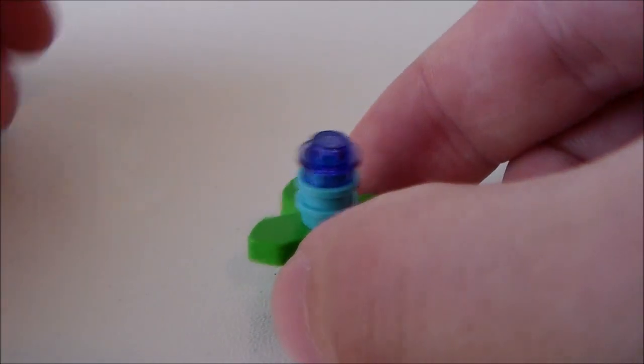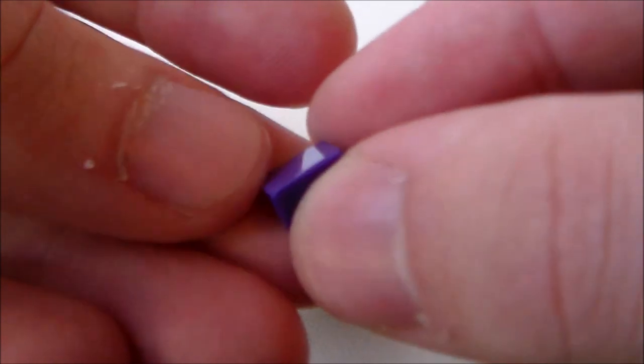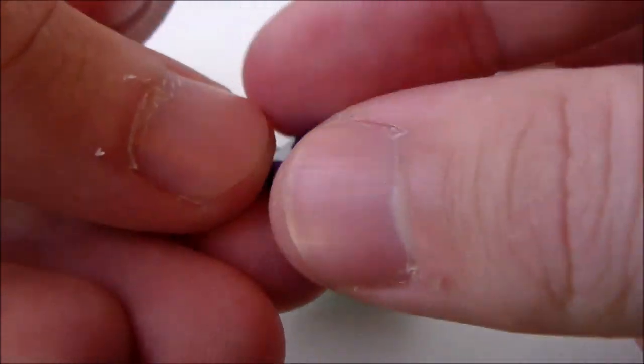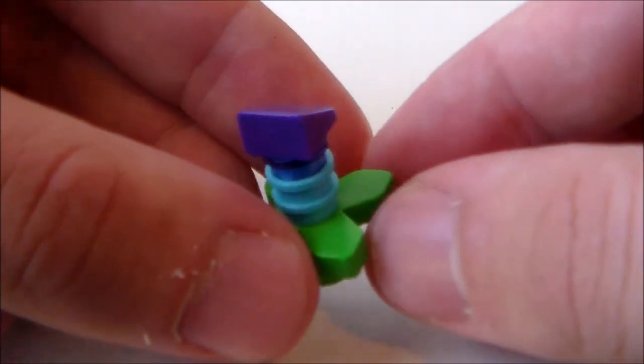And then to finish off the Pitcher Plant, I'm going to get a purple 1x1 cheese slope, and I'm going to put that right on the top right there.